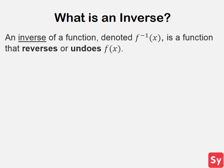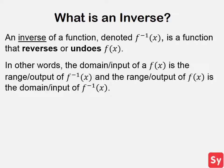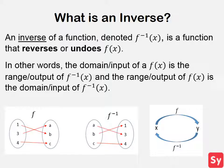What is an inverse? An inverse of a function is a function that reverses or undoes the function. In other words, the domain or input of a function is the range or output of the inverse, and the range or output of the function is the domain or output of the inverse. Here are some images to help you better understand this description and what an inverse is.